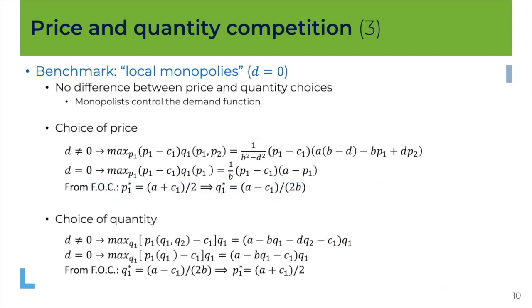Now just before we do that let's have a benchmark, some reference points that we will keep in mind. What happens if there is no competition on the market? And here in this model we can easily represent this by setting d is equal to zero. Remember in that case there is no connection between the two goods in the mind of the consumer and therefore there is no competition between the two firms. There are as if they were local monopolies. Each of them is acting separately.